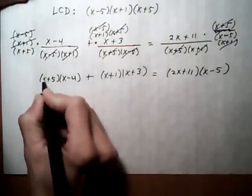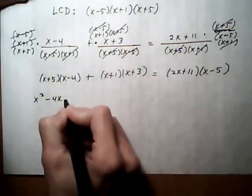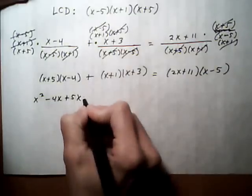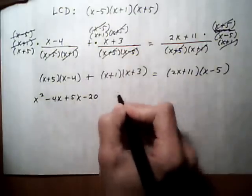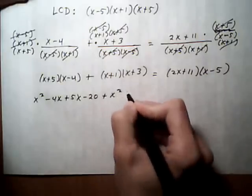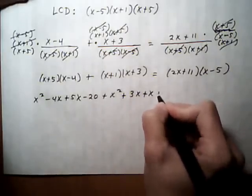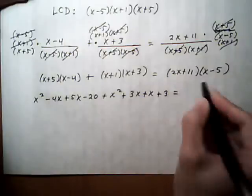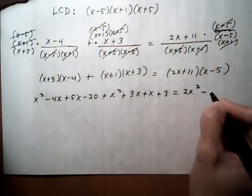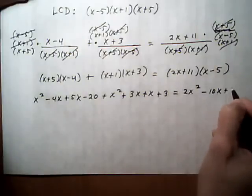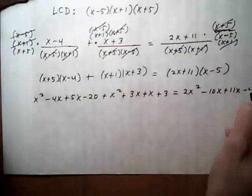We get x squared minus 4x plus 5x minus 20. Next one. Plus x squared plus 3x plus x plus 3 equals. Equals 2x squared minus 10x plus 11x minus 55.